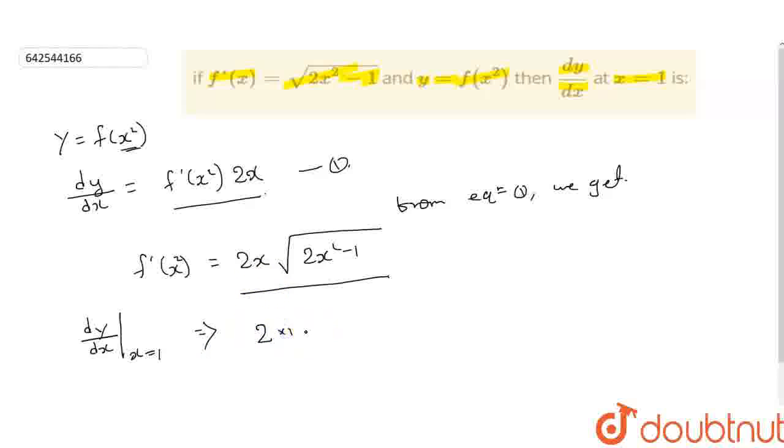So 2 into 1, under root 2 into 1, 2 minus 1. So 2 under root 1 means 1. So 2 is the answer. Thank you.